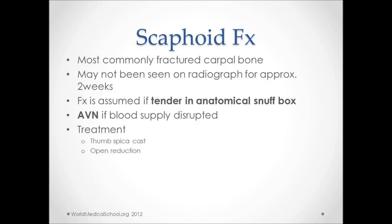Scaphoid fracture is the most commonly fractured carpal bone and is sometimes challenging to see initially on radiographs — it may take two weeks or more. If there is tenderness in the anatomical snuff box, that is highly indicative of a scaphoid fracture. Avascular necrosis can ensue if the blood supply has been disrupted. Treatment includes a thumb spica cast and open reduction.